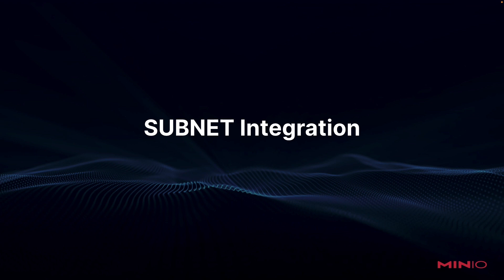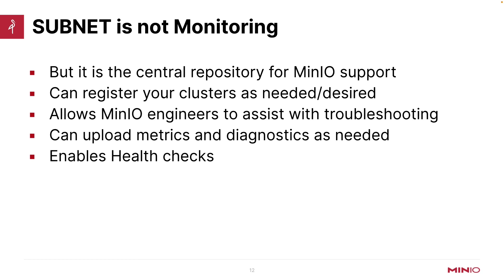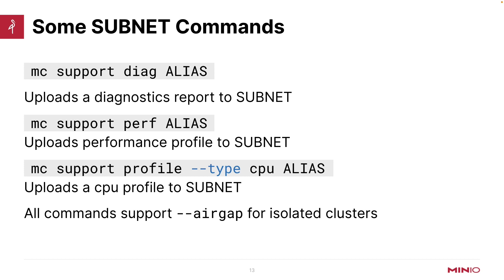Our subscriber network — Subnet integration — is also very easy to use and a very powerful tool. It's not required to run MinIO, but if you want our support, it's the best way to get it. You can register your clusters as needed; you don't have to register to run. It does allow our MinIO engineers to assist with troubleshooting and to see metrics and diagnostics easily without needing to come into your system. This also enables our health check tool. Once registered, you can use 'MC support' commands to upload diagnostics and performance details. If your system is air-gapped, you can use the air gap command to produce a file and upload it yourself to Subnet using your account.